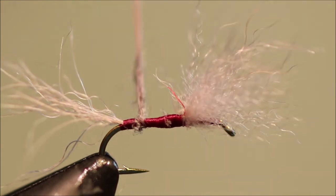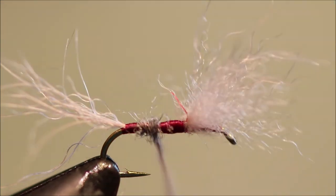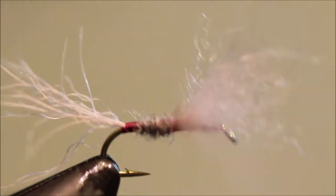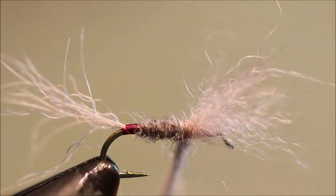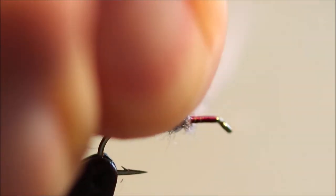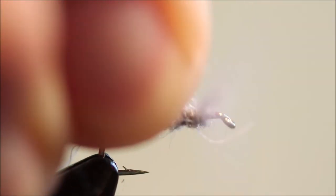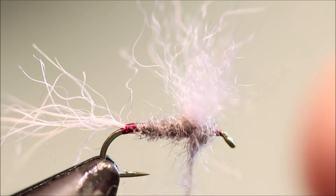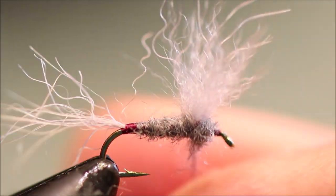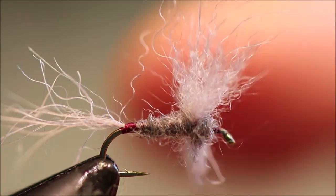So once I get my dubbing caught, I'll just tighten it up as I go. Build up a nice body. Come right up to the back of the wing. Then I'll come to the front and build up against it to support it.